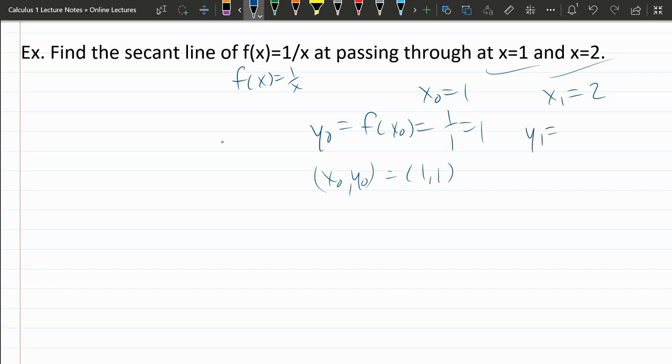y1 is the y value corresponding to x1, f of x1. The function is 1 over x, so we get 1 half. That doesn't reduce, unless you really wanted to write in decimals. But I usually work in fractions. So 2 comma 1 half. Alright, we have our 2 points now.